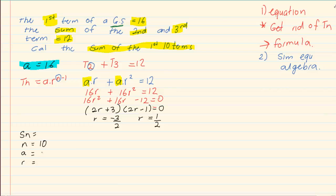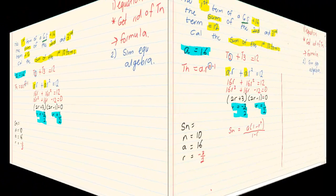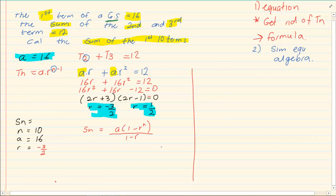We have n is 10, we have a is 16. Because we have two r values, that means we have to do Sn two times. So we're going to first do minus three over two.